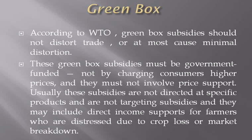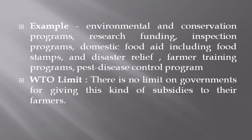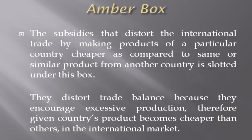Green box subsidies may include direct income supports for farmers who are distressed due to crop loss or market breakdown. Examples include environmental and conservation programs, research funding, inspection programs, domestic food aid including food stamps, disaster relief, farmer training programs, and disease control programs. There is no limit on governments for giving this kind of subsidies to their farmers.